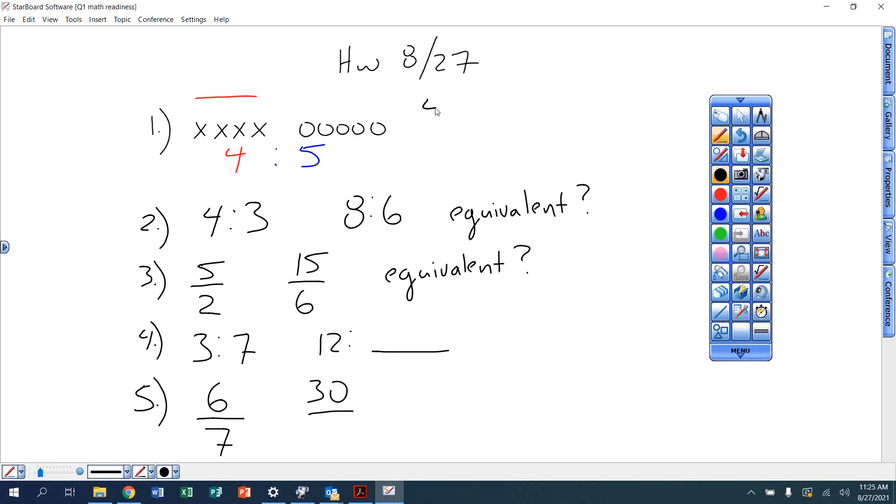Or I could write that 4 to 5, or I could write that as a fraction, 4 over 5. Four boxes or four X's for every five circles. Those are three ways of writing ratios: with the word 'to', colon marks, or as a fraction.